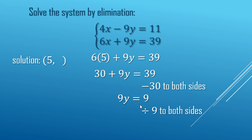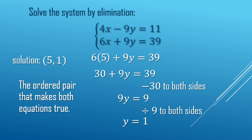Next, divide by 9 to get what y equals. y equals 1. So the solution to the system is (5, 1), because that's the ordered pair that makes both equations true.